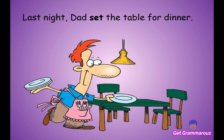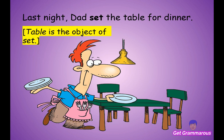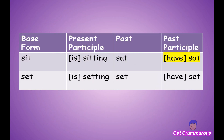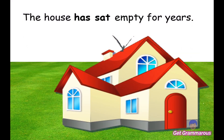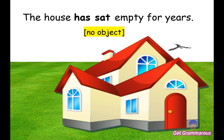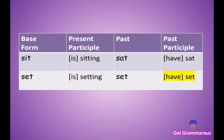Last night, Dad set the table for dinner. 'Table' is the object of 'set' — it's the thing that received the action. Now for the past participle of 'sit': 'The house has sat empty for years.' This sentence does not have an object.